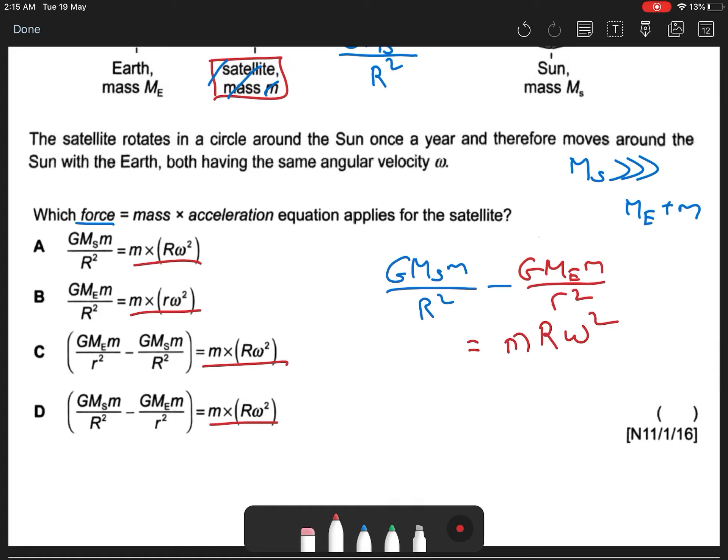So the answer should be which one? Should be D, right? So D. Basically, my blue minus red, this is my centripetal force.